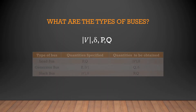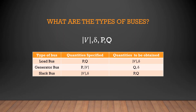Coming to the types of buses: for a load bus, the specified quantities are P and Q, and the quantities to be obtained are |V| and phase angle delta. For a generator bus, the specified quantities are P and |V|, and the quantities to be obtained are Q and delta. Apart from generator bus and load bus, there is one more bus called the slack bus, where the specifications are |V| and delta, and the quantities to be obtained are real and reactive powers.